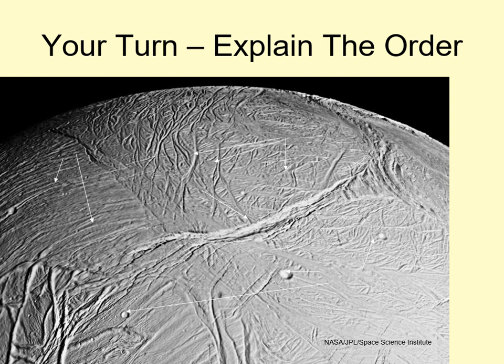Here's a chance to try looking at the history of the surface of a world by examining a picture of Saturn's moon Enceladus. Four sets of features are pointed out: a set of small cracks running left-right across the image, another set of small cracks running up-down mostly in the upper half, a large crack running horizontally across the middle of the image, and a set of small craters mainly visible in the lower half. Try explaining the order of formation based on which features cut off or erase which other features — that's what should define the order.